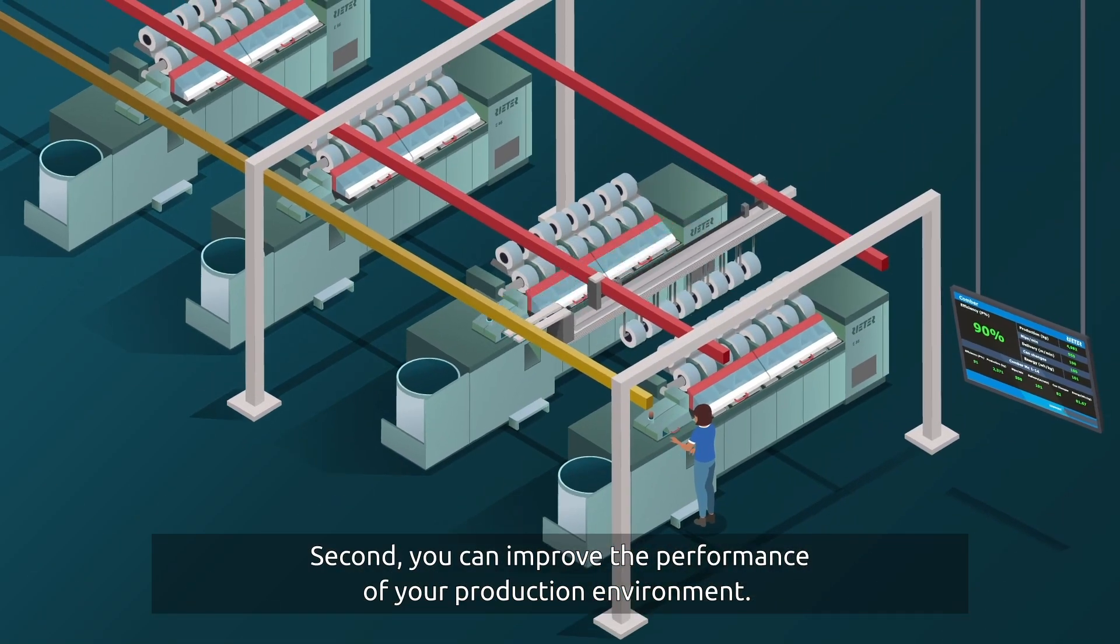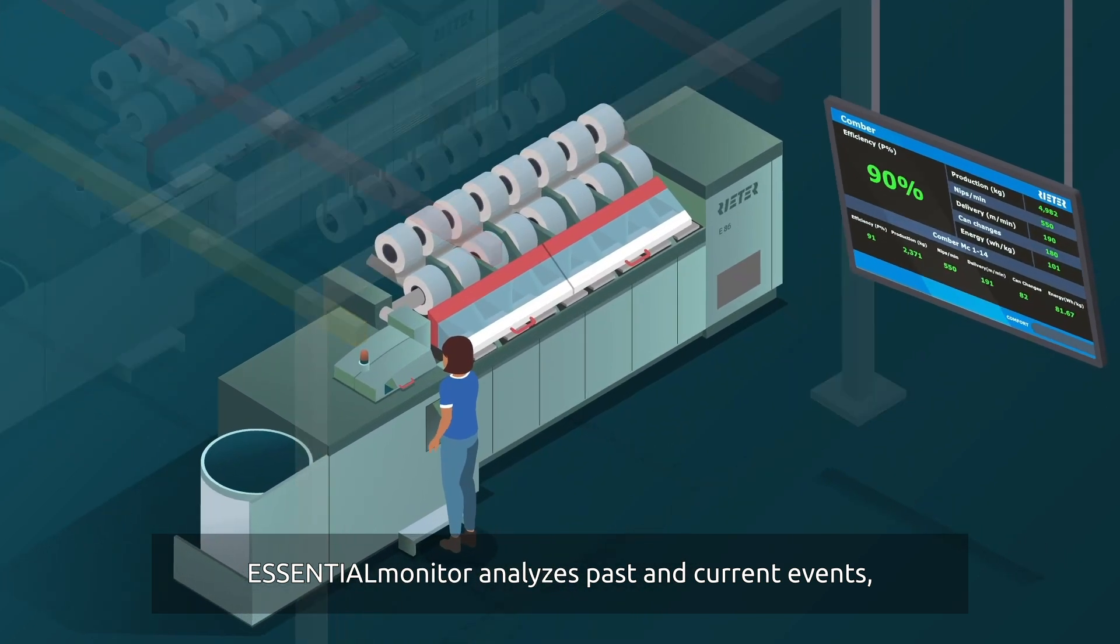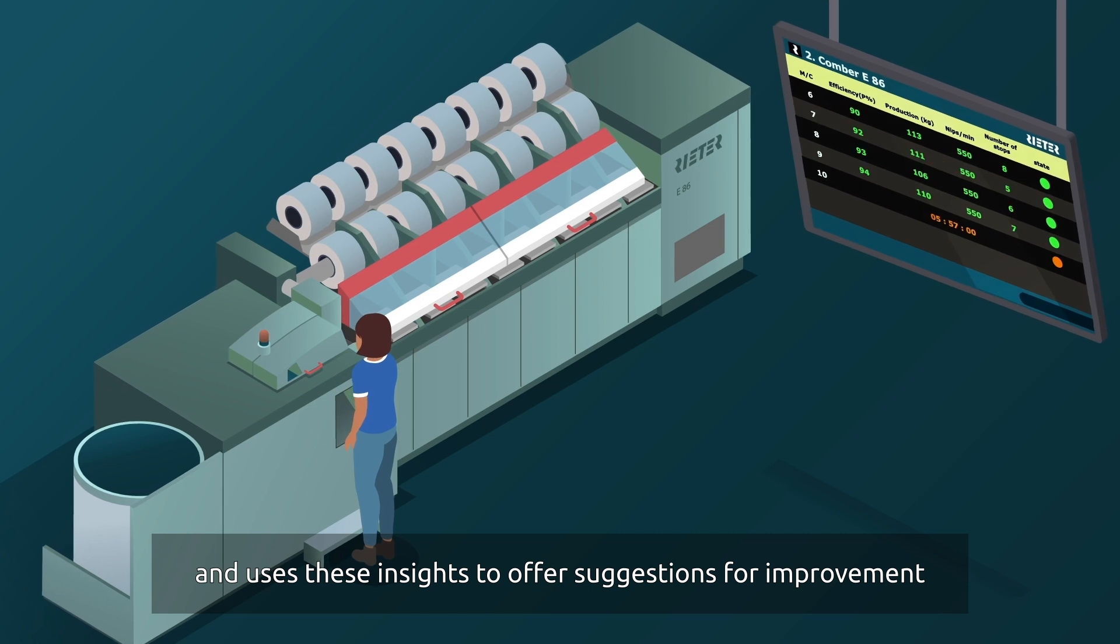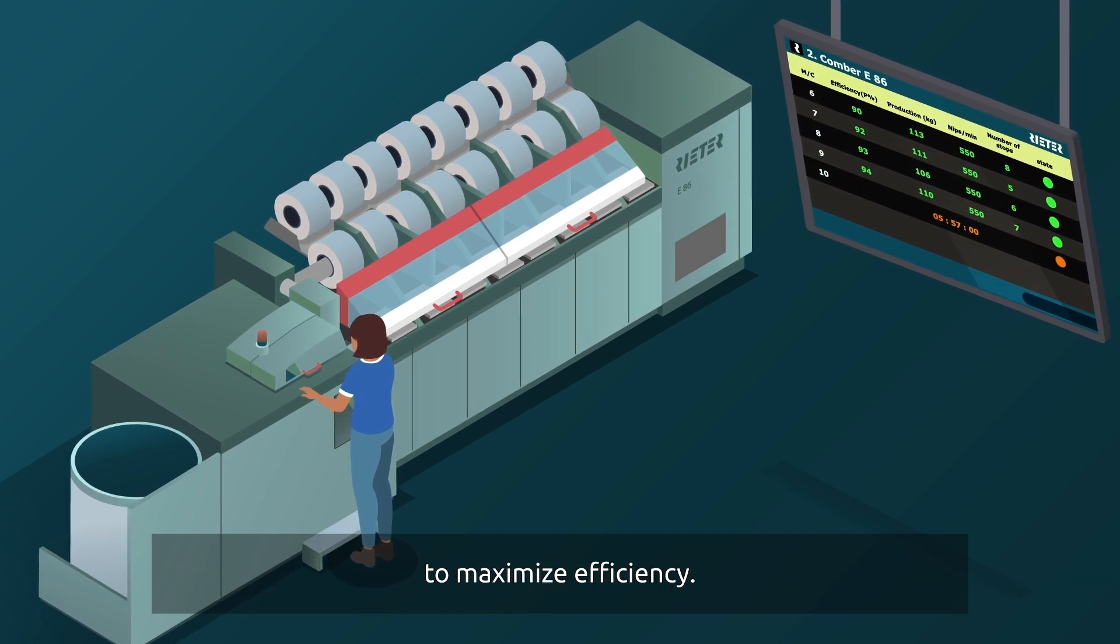Second, you can improve the performance of your production environment. Essential Monitor analyzes past and current events and uses these insights to offer suggestions for improvement to maximize efficiency.